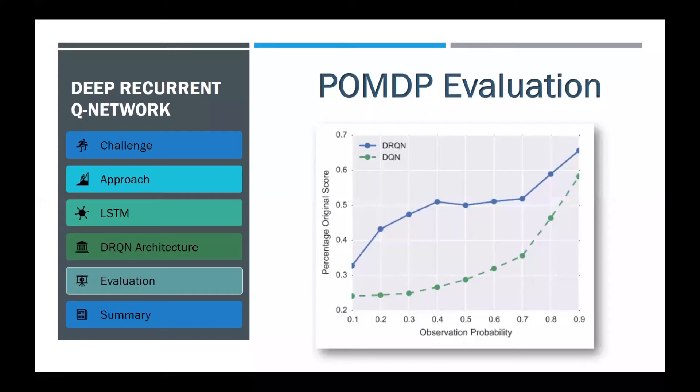In the second experiment, the authors trained the networks on normal games, which are MDPs, and then evaluated on flickering games, which are POMDPs. Each data point shows the average percentage of the original game score over all nine games in the table we showed before. It's really nice to see how DRQN's performance degrades more gracefully than DQN's.